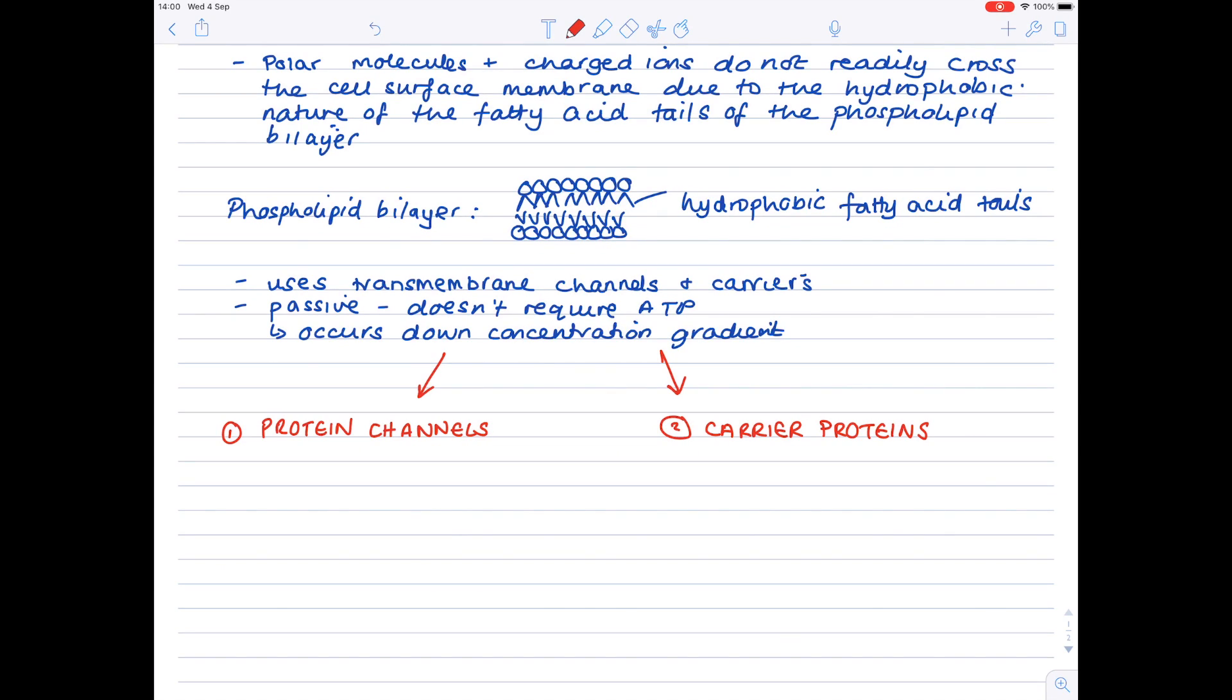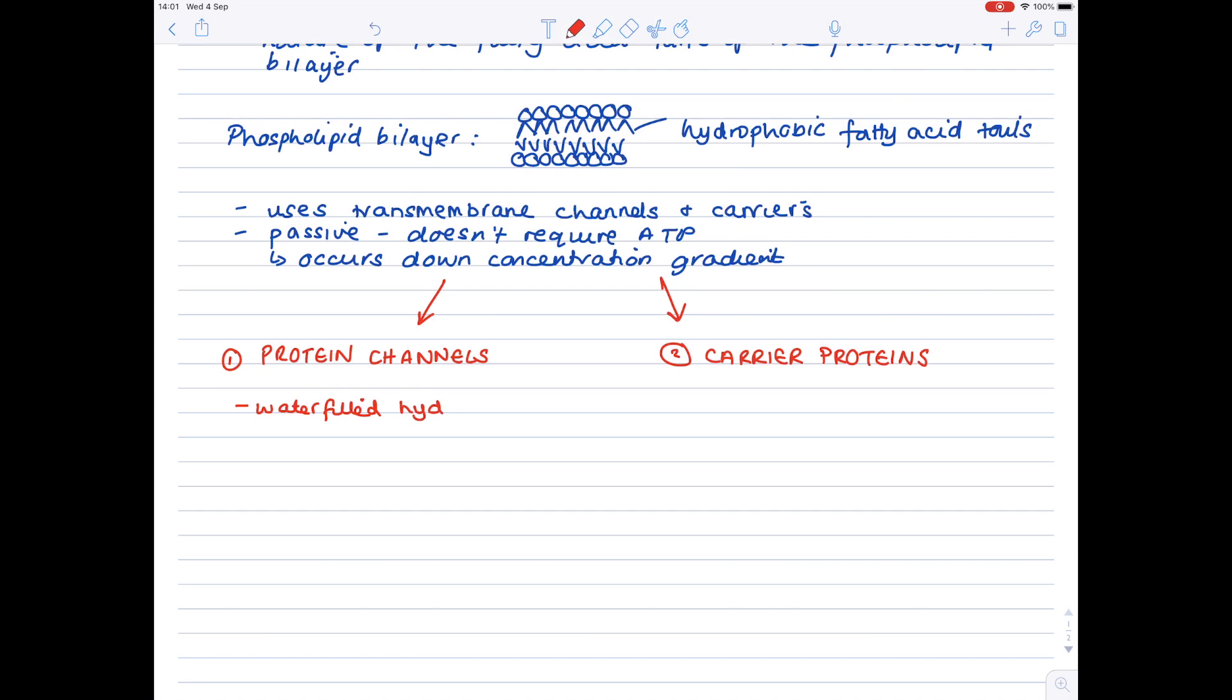So we'll start with the first mechanism, which is for protein channels. Now notice these are water-filled hydrophilic channels, so water-loving channels, and therefore they'll allow specific water-soluble ions to cross. Notice that they're selective. They only open in the presence of a specific ion. If the ion isn't present, they'll remain closed. Next up, the ions bind with the protein, causing it to change shape.